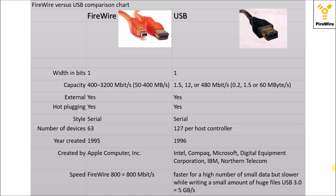The number of devices supported in FireWire is 63, whereas in USB it is 127 devices per host controller. FireWire was created in 1995 by Apple Computer, whereas USB was created by various major companies such as Intel, Compaq, and Microsoft in 1996. The speed of FireWire 800 can be up to 800 MB per second, whereas USB 3.0 can reach up to 5 GB per second.